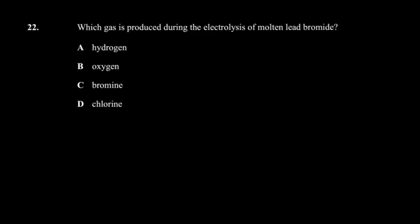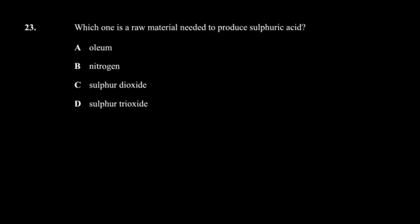Question 23: which is a raw material needed to produce sulfuric acid? You start with clean sulfur dioxide — there's a cleaning process it must undergo. Vanadium pentoxide is used as a catalyst in the process. But the key starting raw material you need is sulfur dioxide, which you can obtain by burning sulfur.